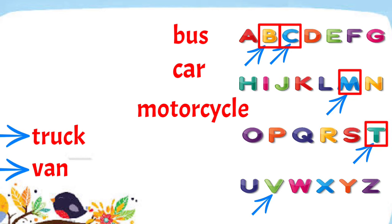So let us put truck next. And finally, the last letter in the group is letter V. So the last word that we have to put is van.